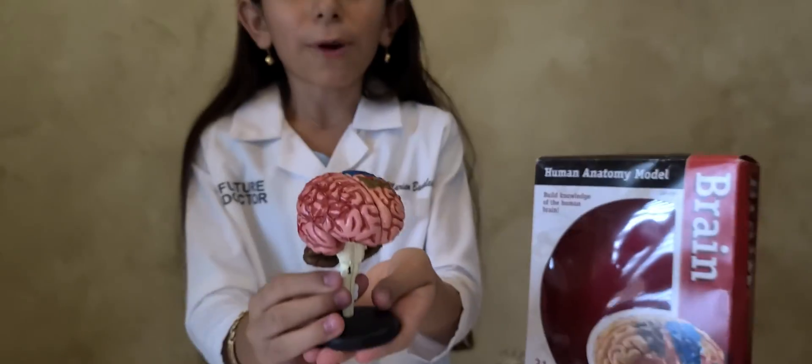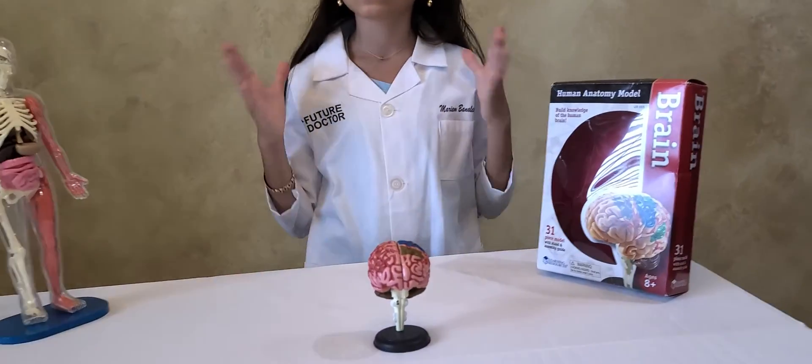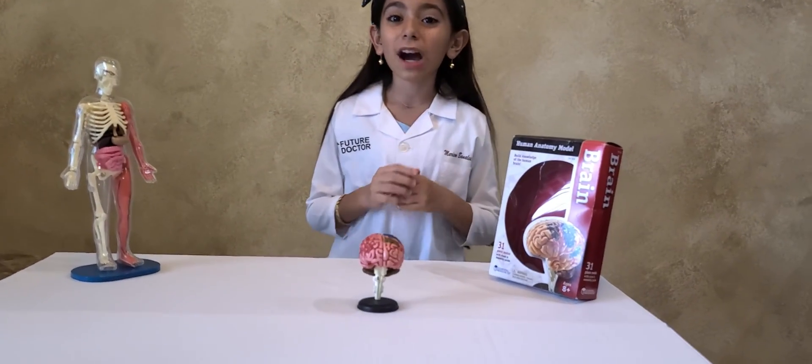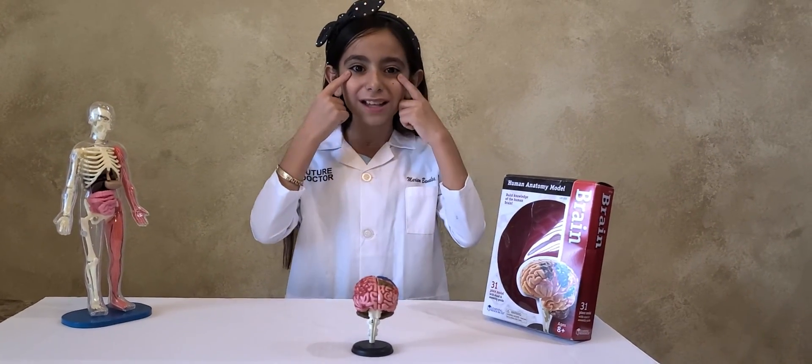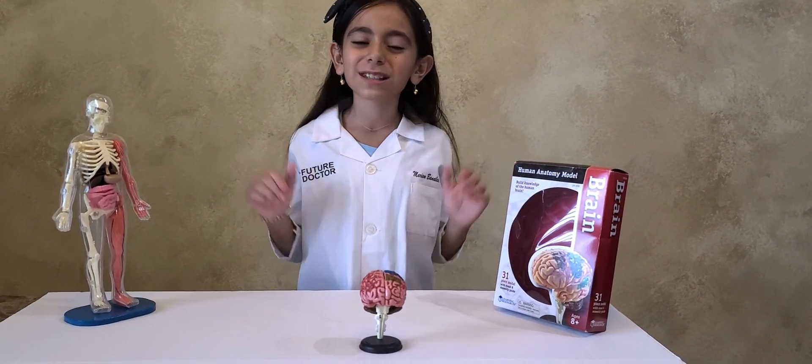So this is how the brain looks like. As we saw, each part of the brain has a different job to do. You need your brain to do almost everything. In fact, right now your brain is sending a message to your eyes to watch this video. Thank you for watching this video. I hope you learned something new.